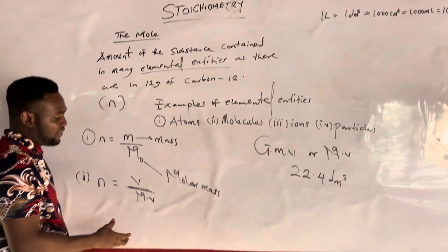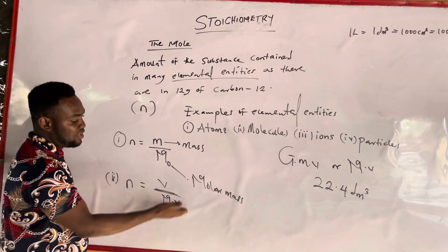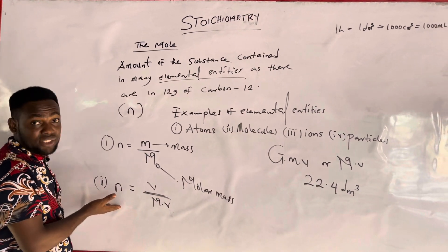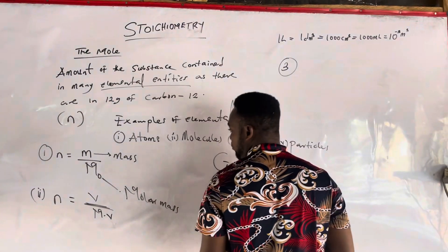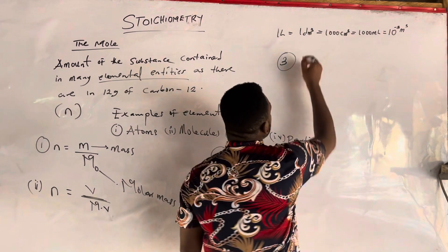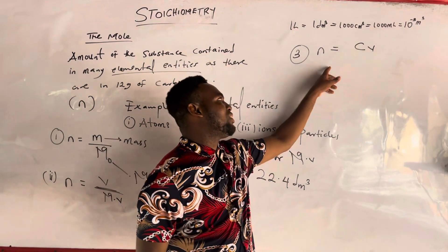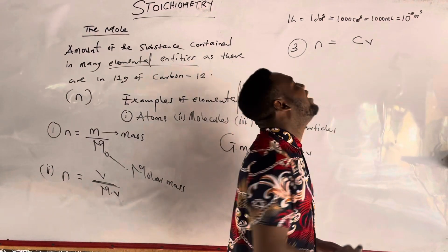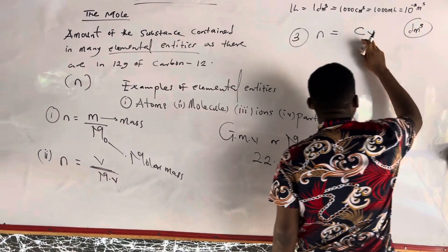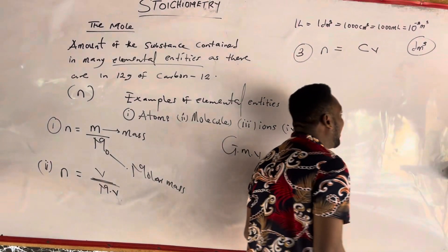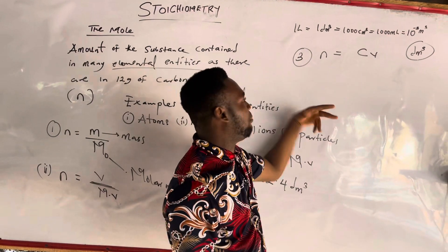When solving with Formula 2, both volume and molar volume must be in dm³ so the units cancel and you get the number of moles. Formula 3: n = CV, where C is concentration and V is volume in dm³. Formula 4: n = CV / 1000, where the volume is in cm³ or milliliters. The 1000 converts the volume to dm³.